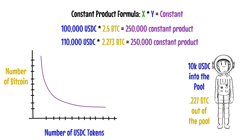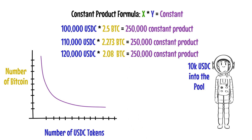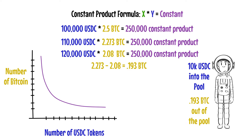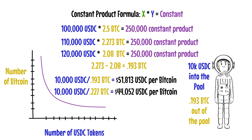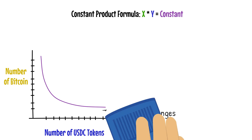The price moved up from $40,000 because the pool constantly adjusts balances based on supply and demand. If another trader makes a $10,000 USDC purchase, the formula now requires 2.08 Bitcoin to maintain the $250,000 product, so the next $10,000 purchase receives only 0.193 Bitcoin — a cost of almost $52,000 per Bitcoin. The price moved almost $8,000, nearly twice as much as during the previous trade. You can see how as the pool grows increasingly weighted toward USDC, the price per Bitcoin increases exponentially, represented by the long tails on this curve.